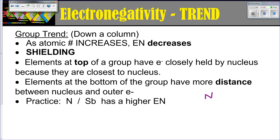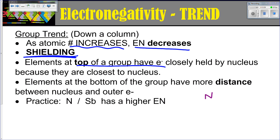If you're looking down a group, as your atomic number increases, your electronegativity is going to decrease. The main reason for this is shielding. If electronegativity is how much pull an atom is going to have, the more layers of energy levels present, the less pull and less attraction that nucleus is going to have on the electrons it's bonded with. Electrons at the top of a group are closely held, but as you move down with more shielding, they're further from the nucleus and there's less pull during bonding.